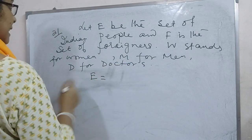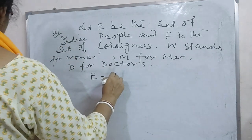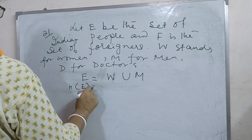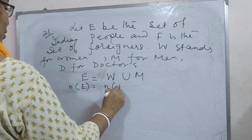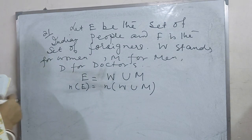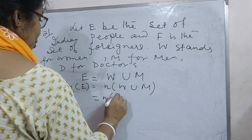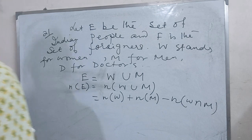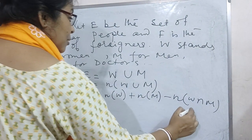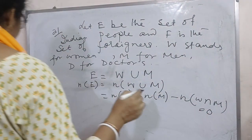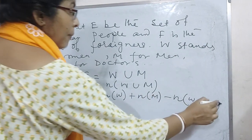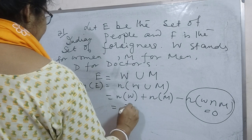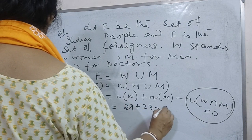Here E equals Indian people equals Women union Men. So the number of E equals number of Women union Men, which equals N(W) plus N(M) minus N(W intersection M). Since a man cannot be a woman, the intersection is 0. Therefore this equals 29 plus 23, which equals 52.